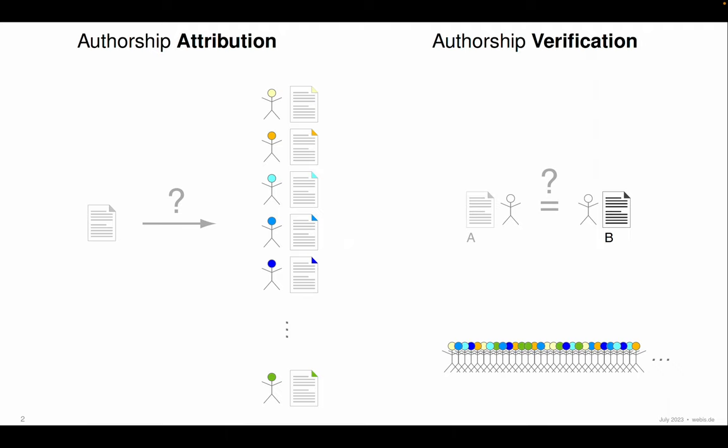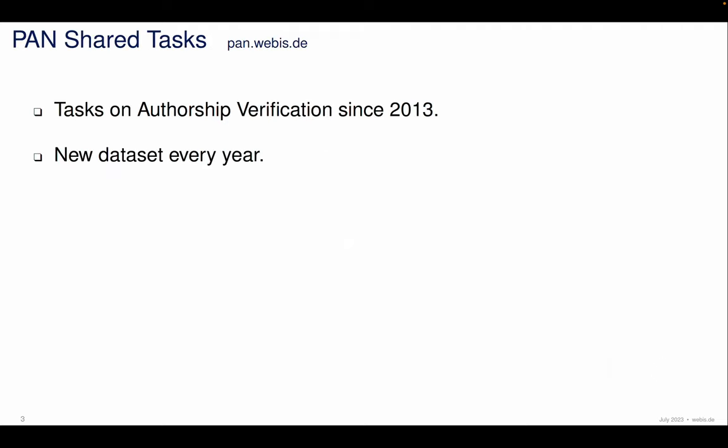Since we're working with text pairs in both scenarios, you might already see that we can rephrase the attribution scenario also as a series of verification scenarios. And that's what we've been doing at PAN — we've been organizing shared tasks on authorship verification since 2013, and in almost each of those years we had a task with a new dataset.